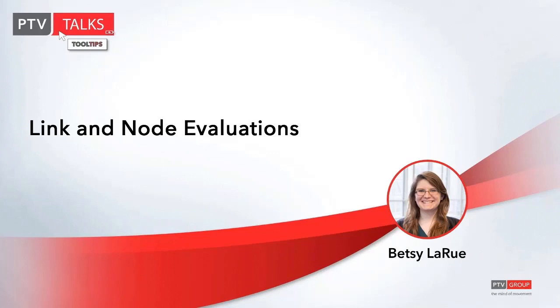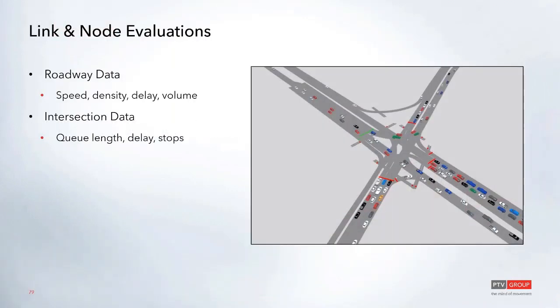Our final section today is going to look at evaluations for both links and nodes — reviewing results and visualizations. Both link and node evaluations can be used to look at roadway data such as speed, density, and volume, or the nodes can be used to look at intersection data such as queue lengths, delays, and stops.